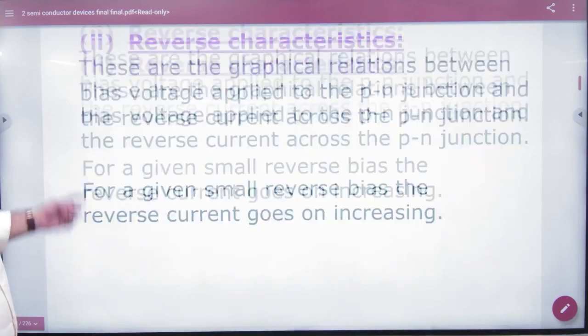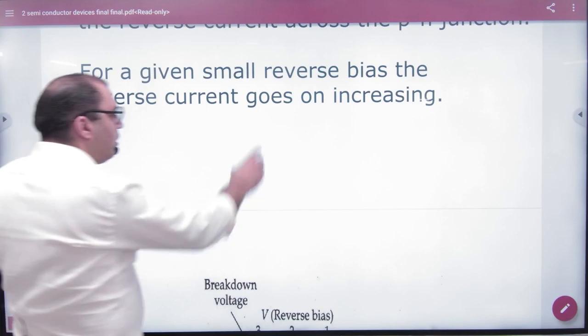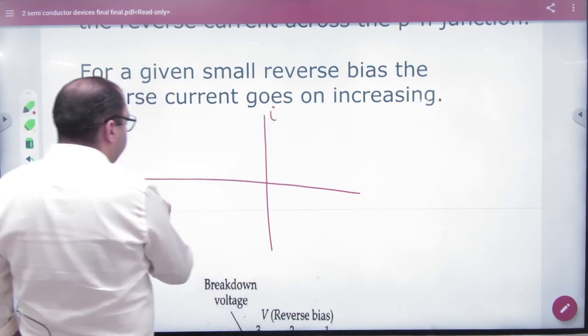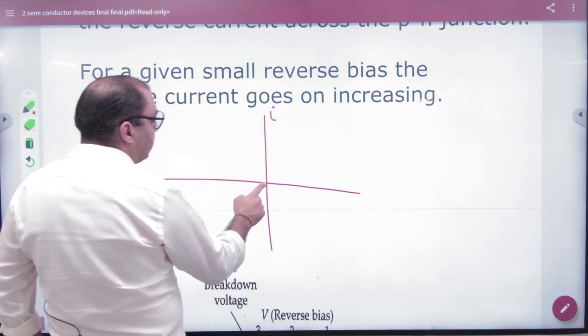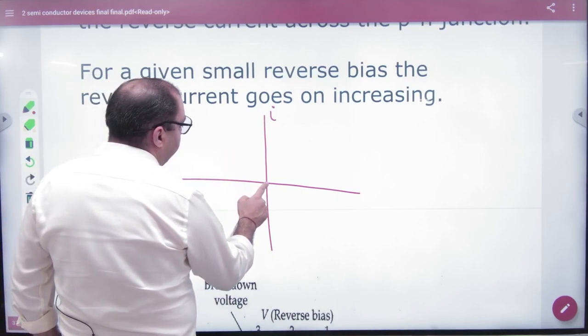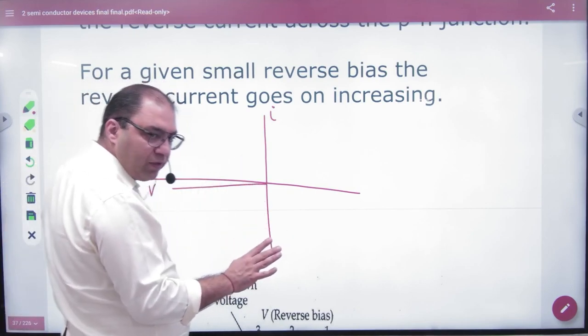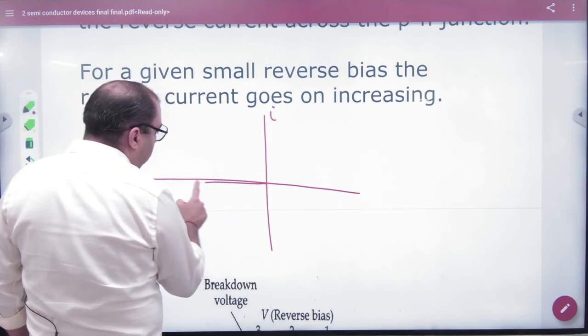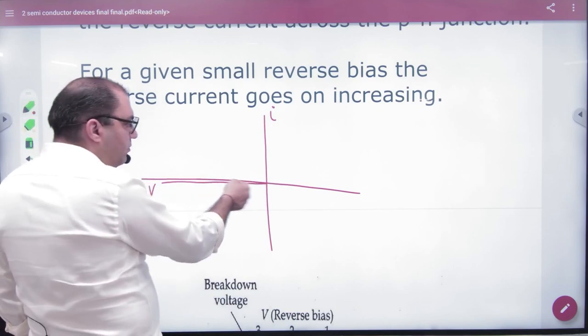In reverse characteristics, which graph is this current and this voltage? The graph is going to be like this. The first thing is in this coordinate, I and V are both negative. It's really very low. The minority current is very low. The voltage is greatly greater, greater, greater. The minority current is not greater.